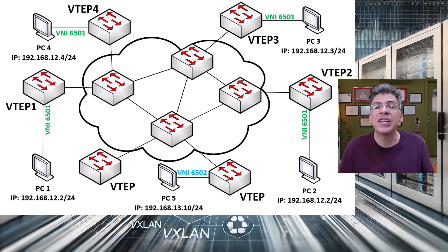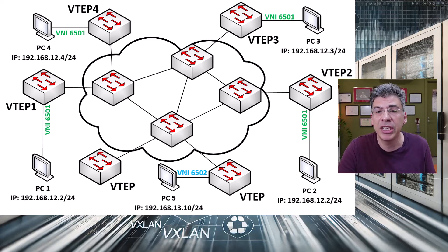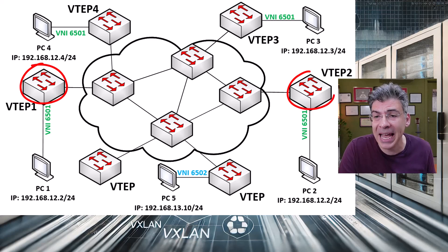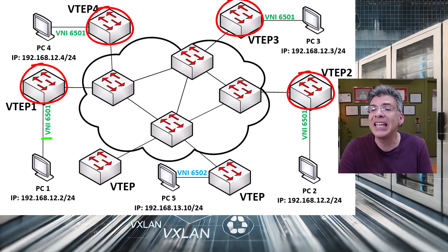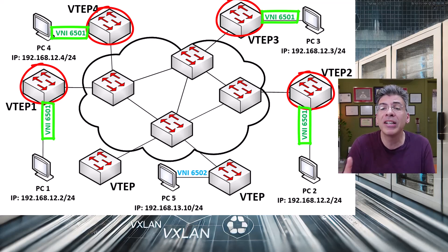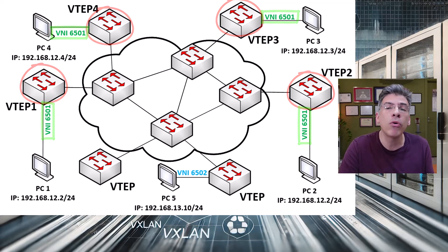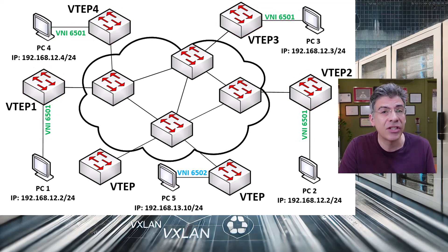VXLAN is used to span Layer 2 segments across the VXLAN topology. These Layer 2 segments can be present in many VTEPs, as shown here. Here we have four VTEPs with hosts on the 6501 VNI. In a production environment, you may have a single VNI present on dozens, or in extreme cases, on hundreds of VTEPs. So it's not immediately clear where, in this whole topology, routing is to be performed.